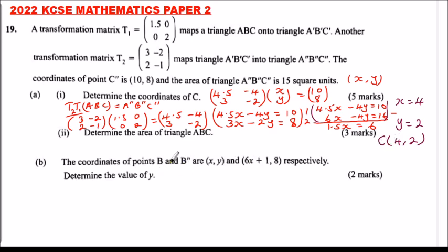Part B: determine the area of triangle ABC. The area scale factor equals the determinant of the matrix of transformation. Our combined transformation matrix is (4.5, -4, 3, -2), so we need to find its determinant.